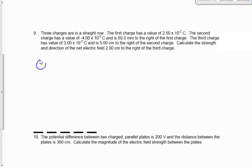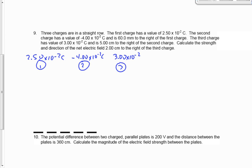The first charge is 2.50 times 10 to the minus 2 coulombs, the second is negative 4.00 times 10 to the minus 2 coulombs, and the third is positive 3.00 times 10 to the minus 2 coulombs. The first and second charges are 60 millimeters apart — make sure you pay attention to those units, millimeters. Then we get five centimeters, and then we have a field strength point two centimeters to the right of the third charge.